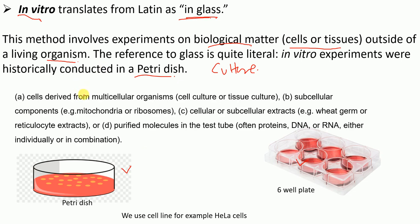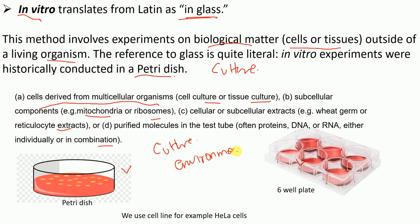The different kinds of experiments that come under in vitro include: cells derived from multicellular organisms such as cell culture or tissue culture; sub-cellular components like mitochondria and ribosomes; cellular or sub-cellular extracts such as reticulocyte extracts; and purified molecules in test tubes — proteins, DNA, or RNA, either individually or in combination. The most important point is the culture environment — performed in petri dishes, well plates, or test tubes.